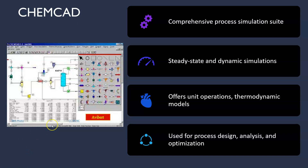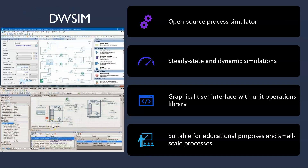Now let's explore an open source option for process simulation: DWSIM. This is free software that provides a graphical interface ideal for educational purposes. DWSIM allows chemical engineers to simulate and analyze various processes, enhancing their understanding of chemical engineering principles.